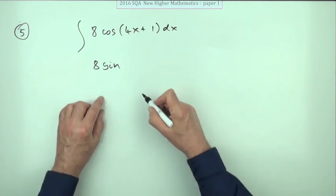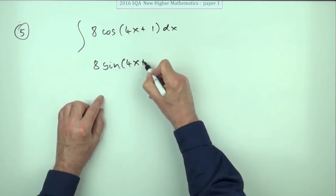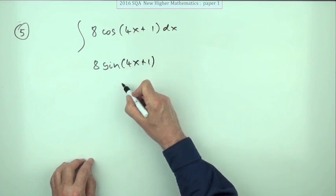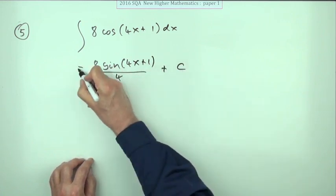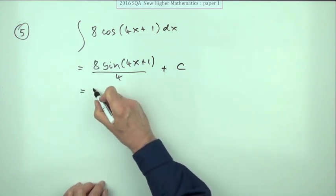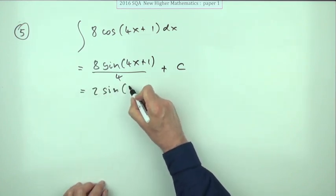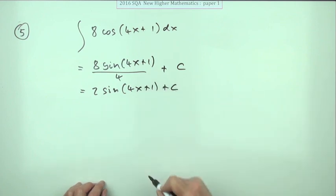the coefficient of 4x plus one, but don't forget to divide by four. I don't normally do that, but don't forget plus C. So the answer is simply 2 sin(4x+1)/4 plus C.